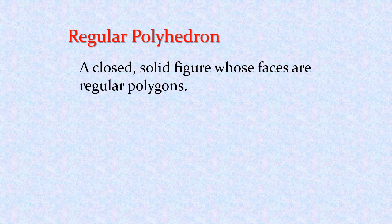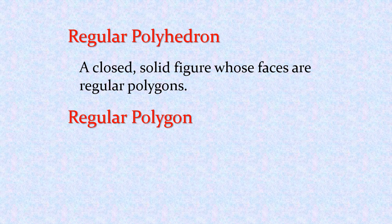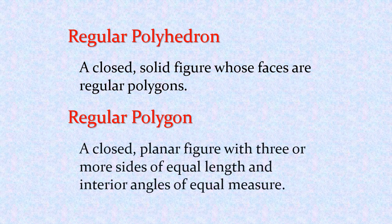So what is a regular polyhedron? A regular polyhedron is a closed solid figure, meaning it's in three dimensions, whose faces are regular polygons. That begs the question: what is a regular polygon? It is a closed planar figure — planar meaning it's on a flat plane or two-dimensional — with three or more sides of equal length and interior angles of equal measure.